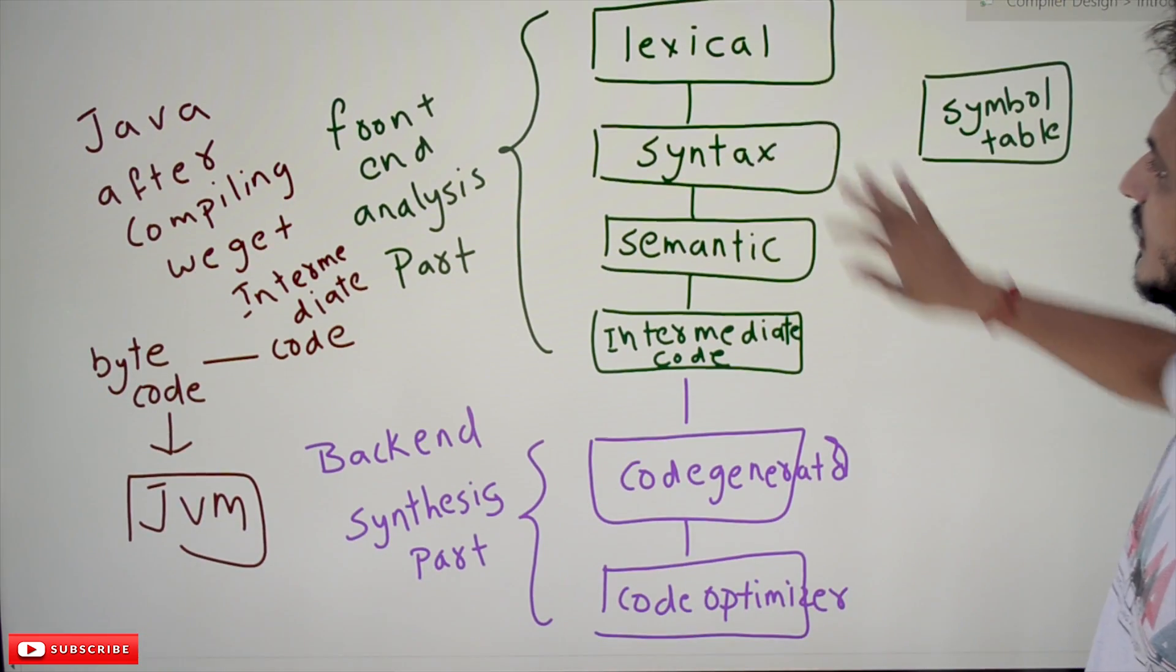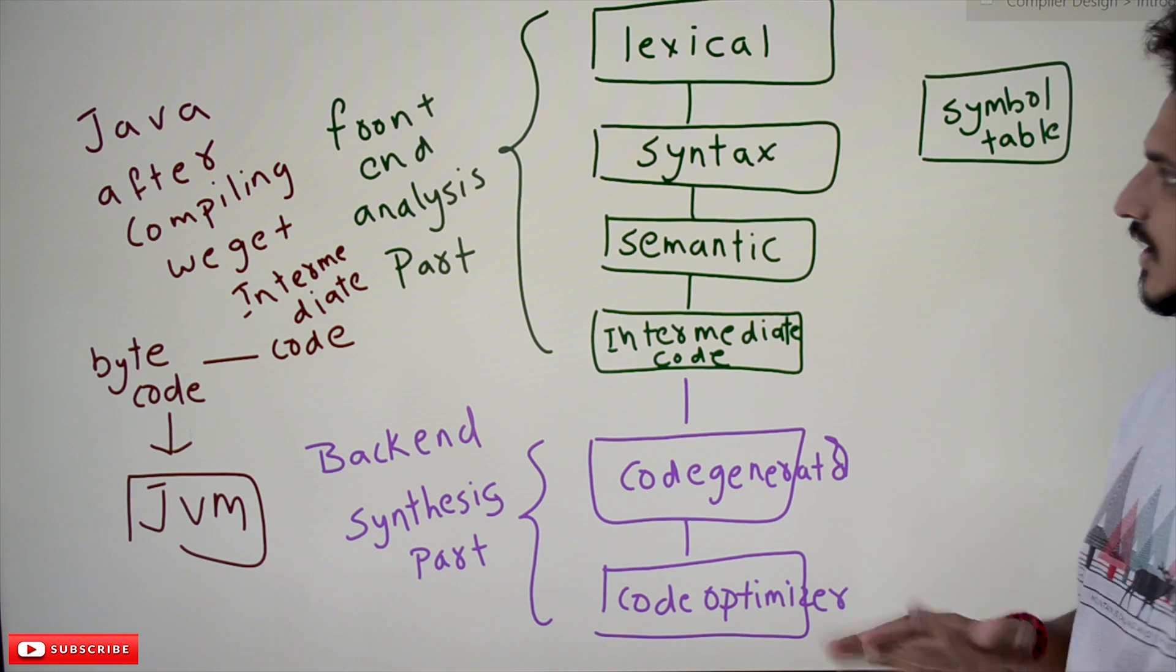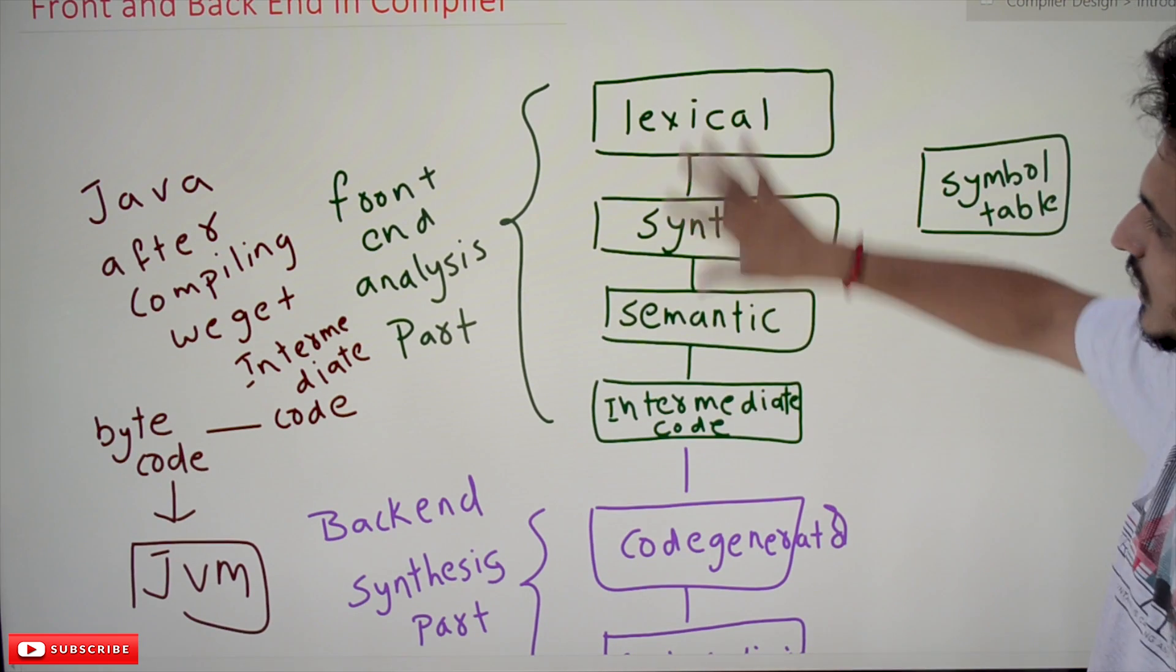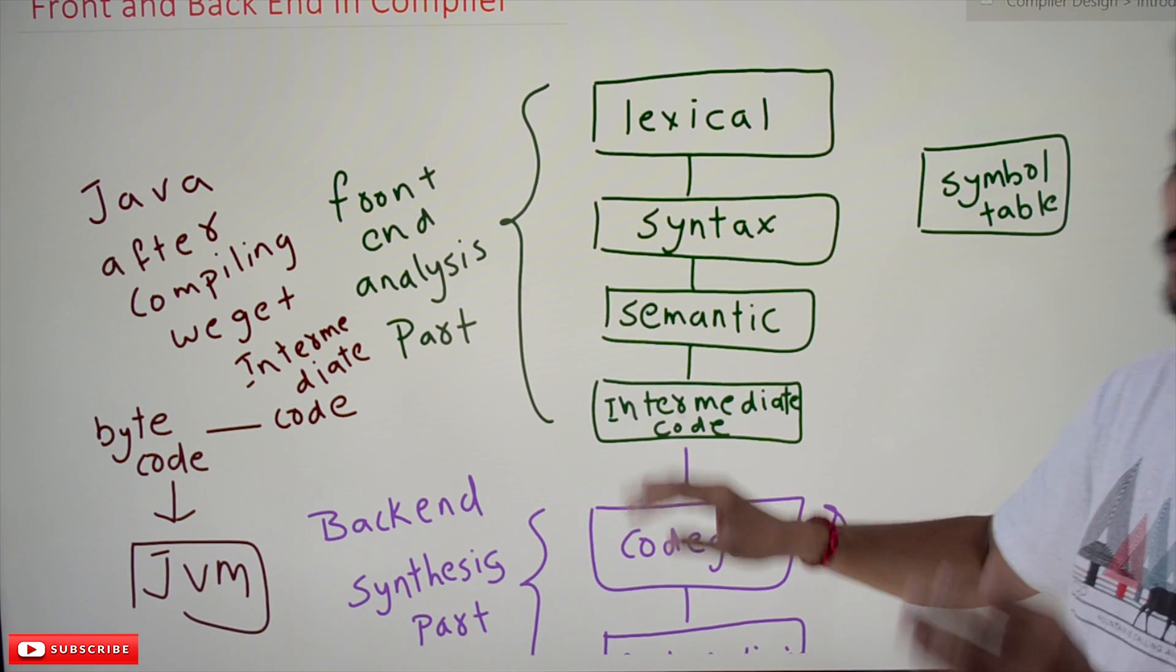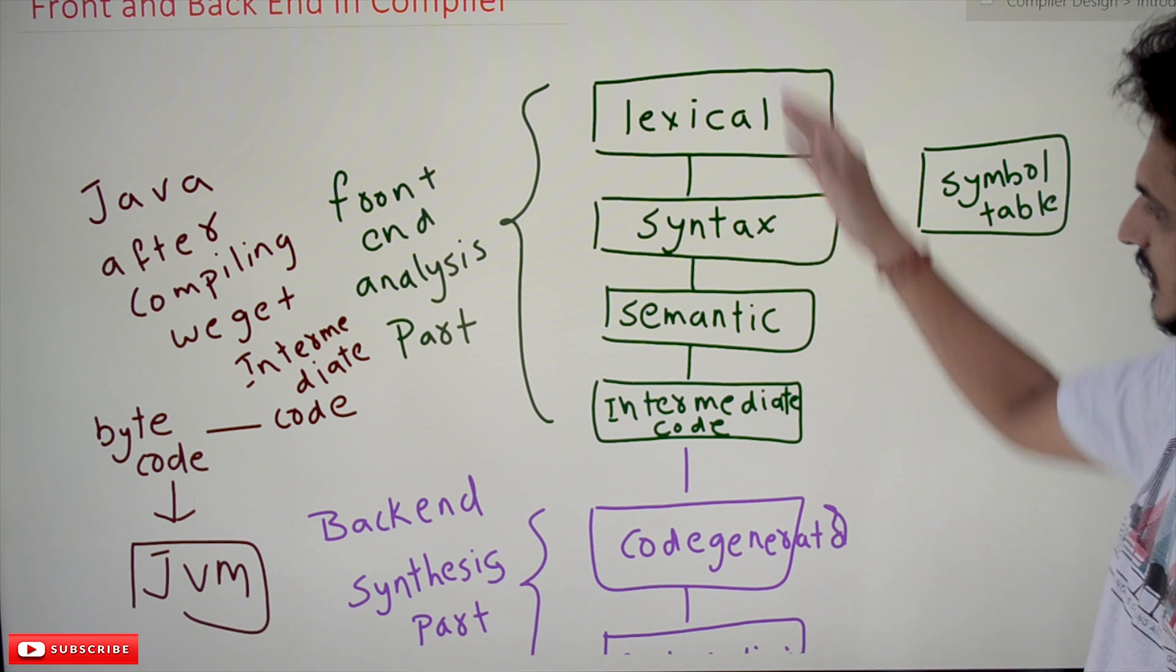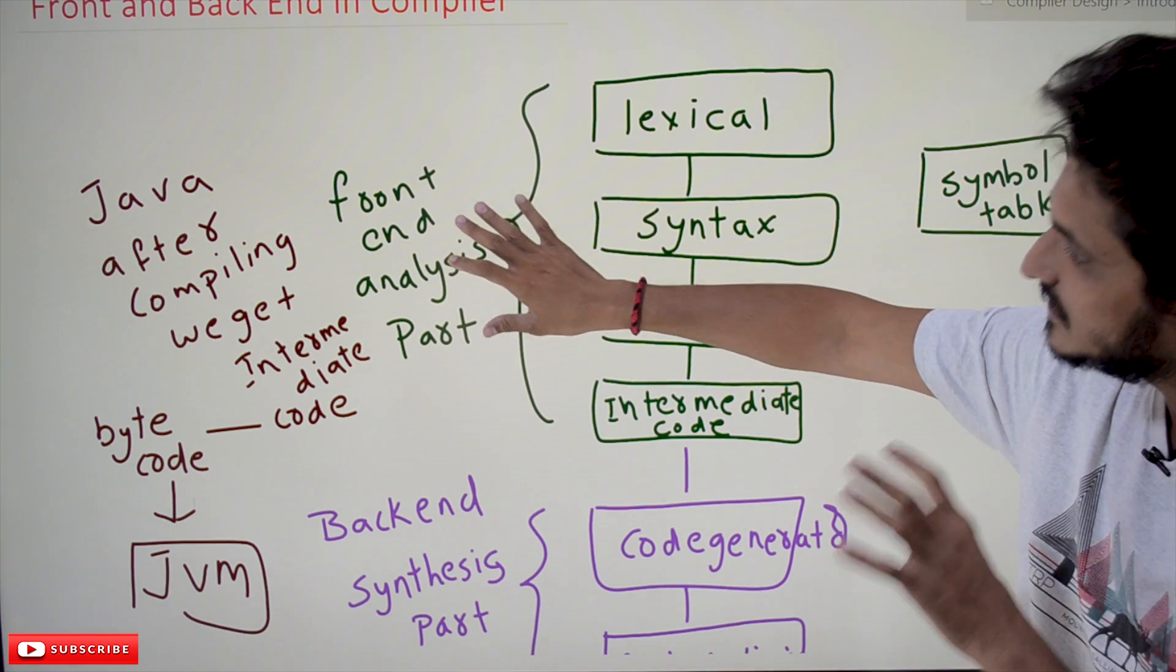These are the phases of compiler: the lexical phase, syntax, semantics phase, intermediate code generation phase. All these discussions were made in the previous class. This part we call the front-end or analysis part. You give the source program and it converts up to here—this is the analysis part or front-end.